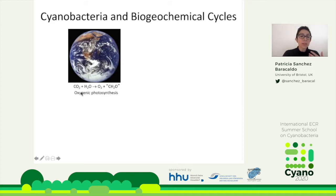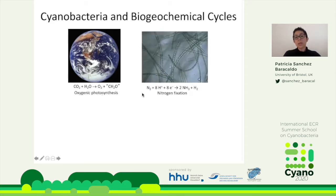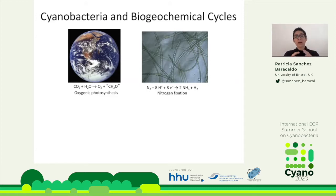Cyanobacteria fix carbon dioxide, use water as the electron donor, and make carbohydrates or sugars, releasing oxygen as the waste product. Another thing that quite a lot of them are able to do is fix nitrogen — they transform atmospheric nitrogen into bioavailable nitrogen. Atmospheric nitrogen is a very stable gas with three bonds that are really hard to break. I believe it is the combination of these two metabolisms that enabled cyanobacteria to make our planet habitable.